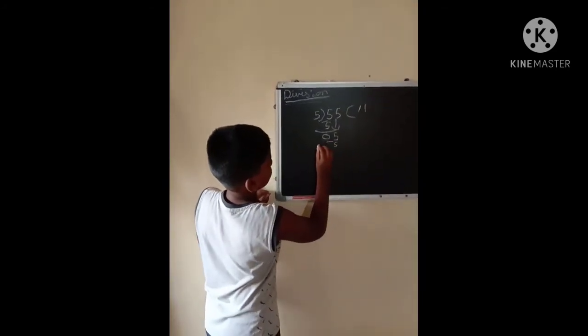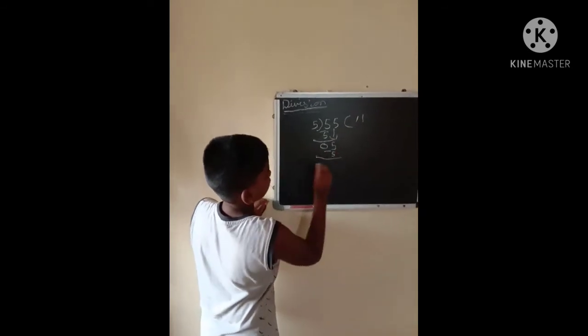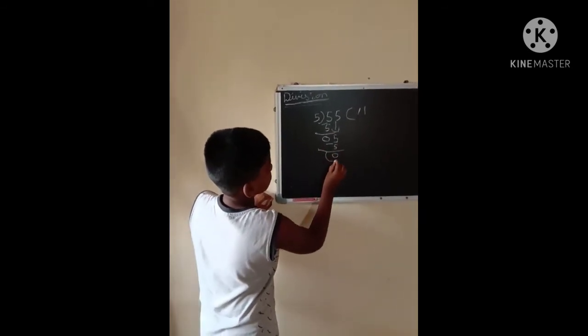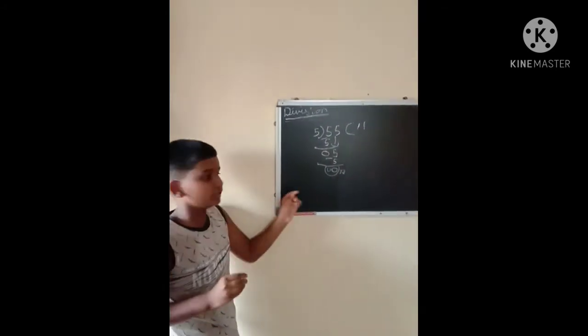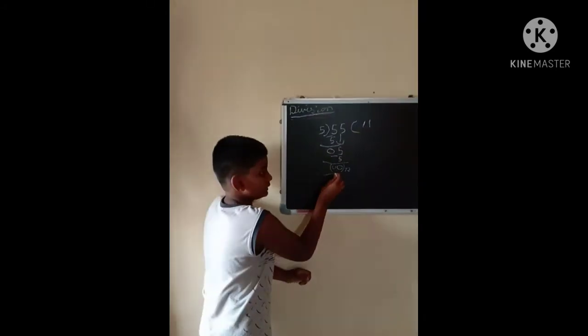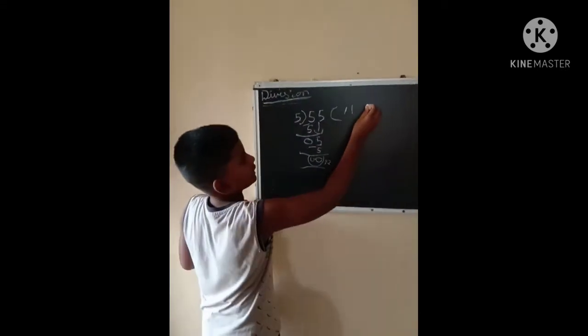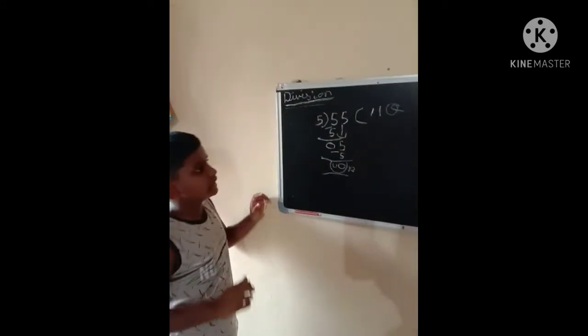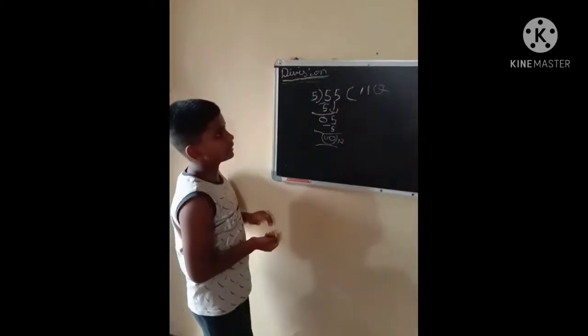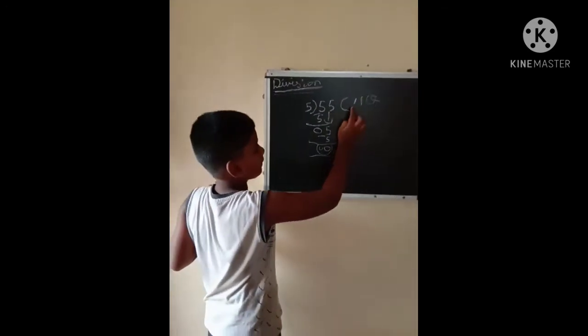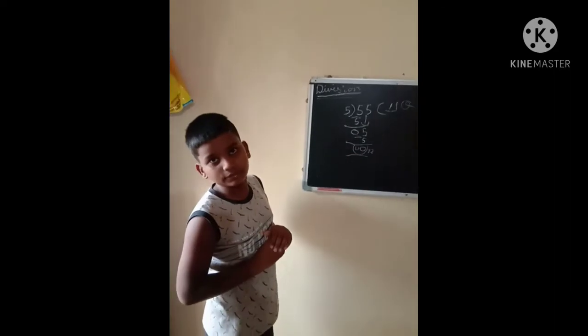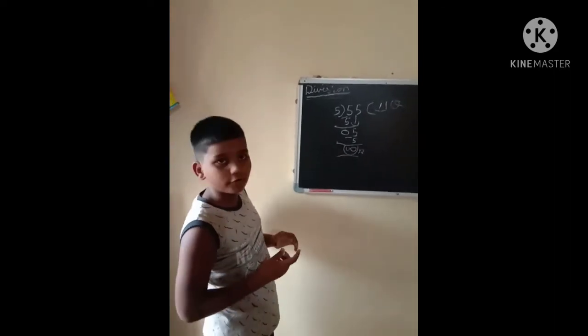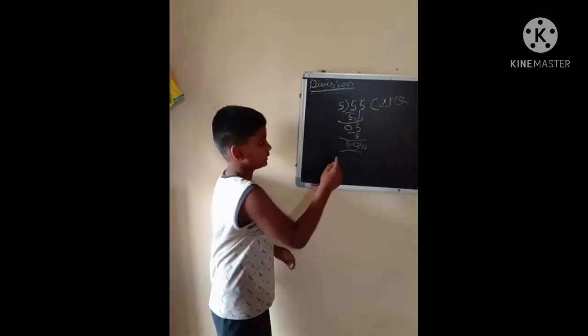This is called as remainder. Okay guys, here it is called as remainder and here it is called as quotient. Means I will give 11 chocolates to my five friends. Okay guys, and how many chocolates will be remainder? Zero chocolates will be remainder.